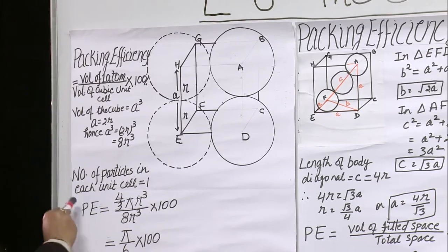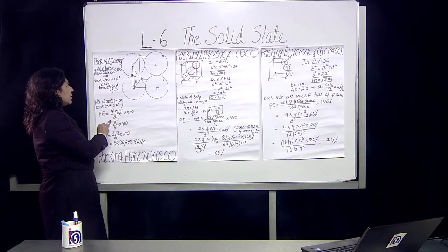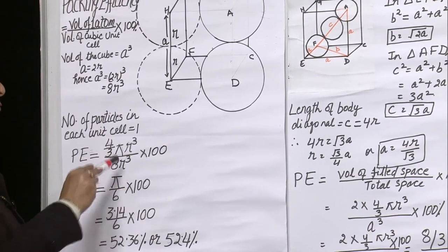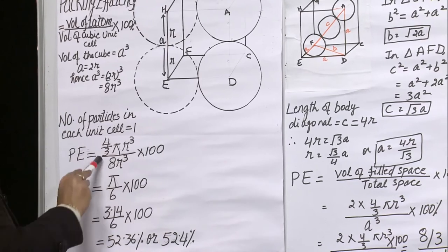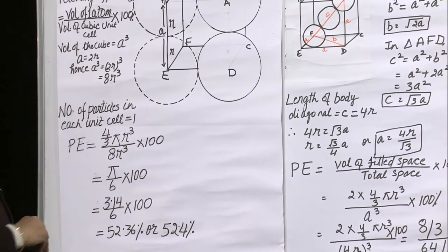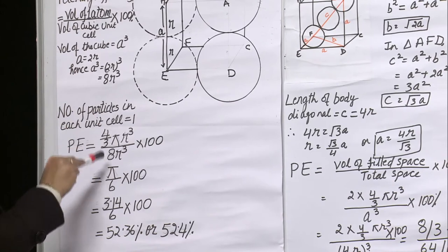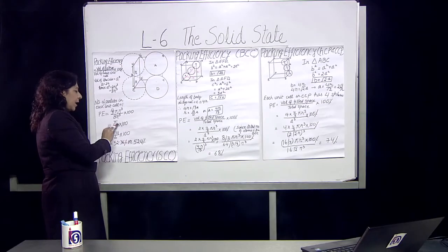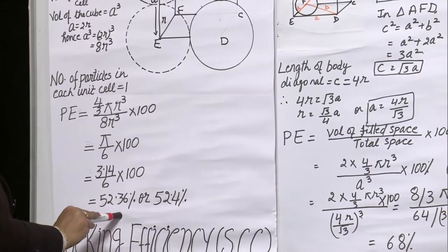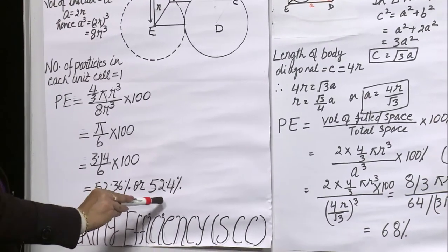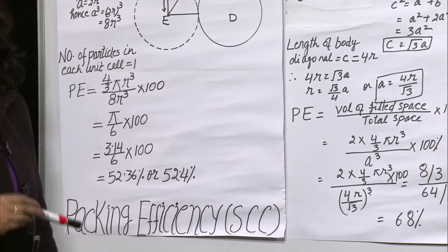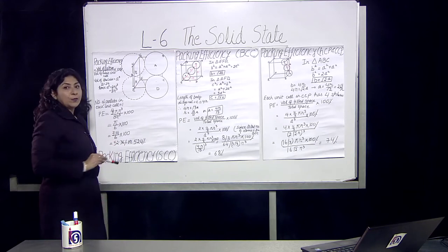Now let us put this into the formula. Packing efficiency is the volume of 1 atom — the volume of a sphere is (4/3)πR³ — divided by the volume of the cubic cell, which we have found to be 8R³. Keeping the value of π as 3.14 and calculating, we get 52.36%, or 52.4%. So 52.4% is the packing efficiency of the simple cubic cell. It means the remaining parts are voids.